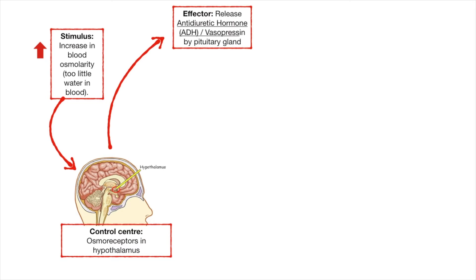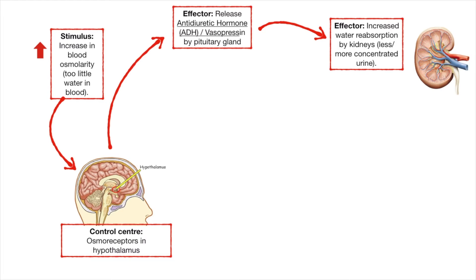The effects of the osmoreceptors in the hypothalamus detecting high osmolarity are twofold. The first effect is hormonal: they stimulate the release of antidiuretic hormone, also called vasopressin, by the pituitary gland, which is attached to the hypothalamus. The vasopressin, or antidiuretic hormone, will go to the kidneys through our blood, and there it will stimulate the increased reabsorption of water by the kidneys, making us produce less urine and more concentrated urine.